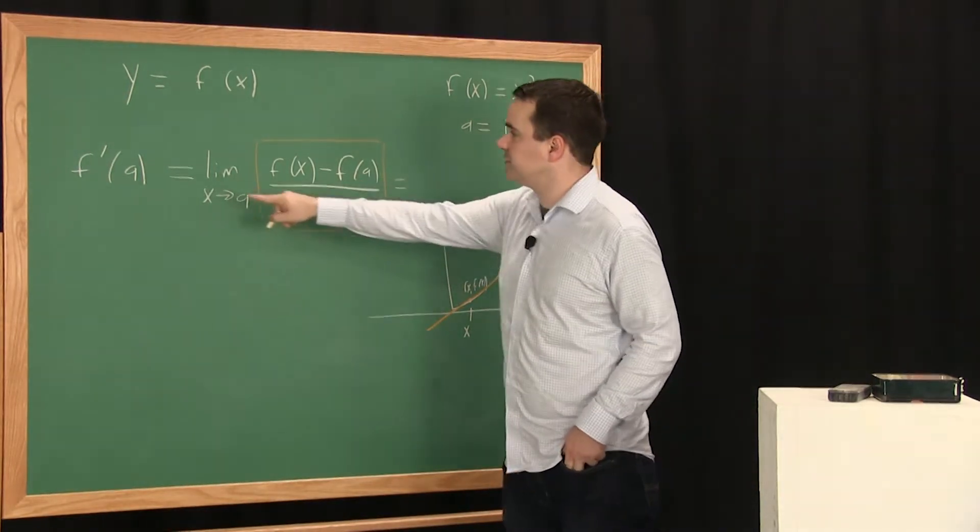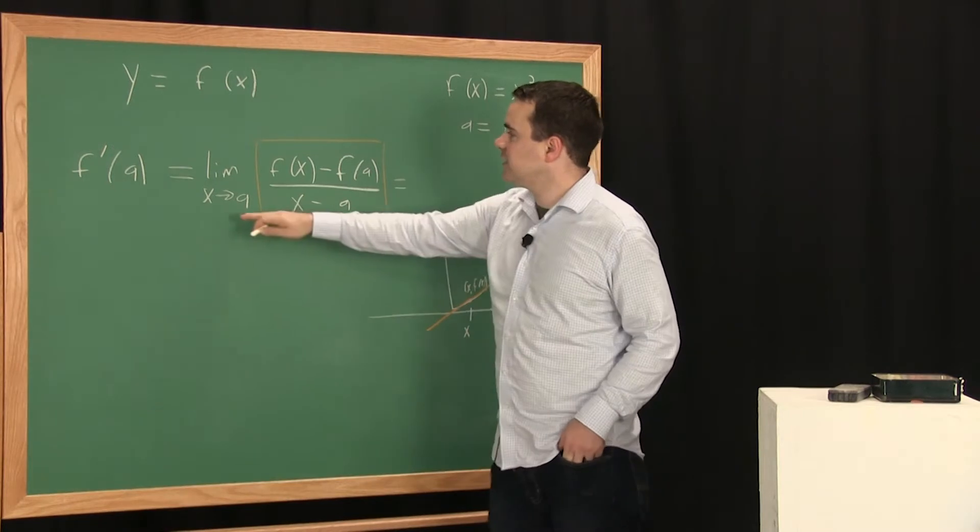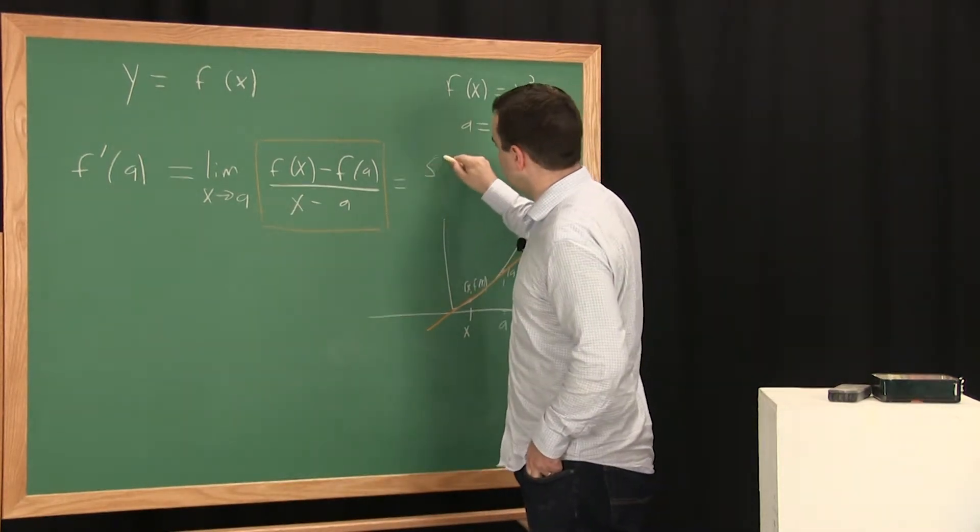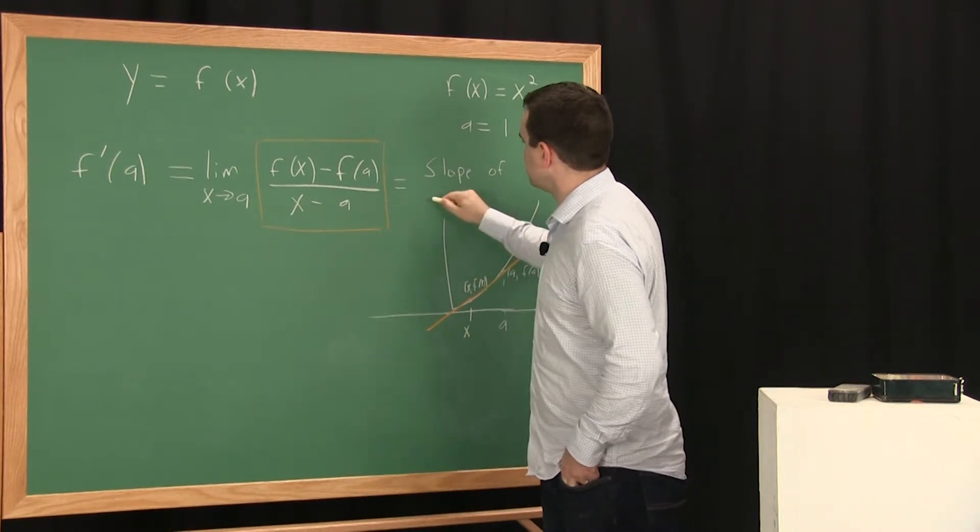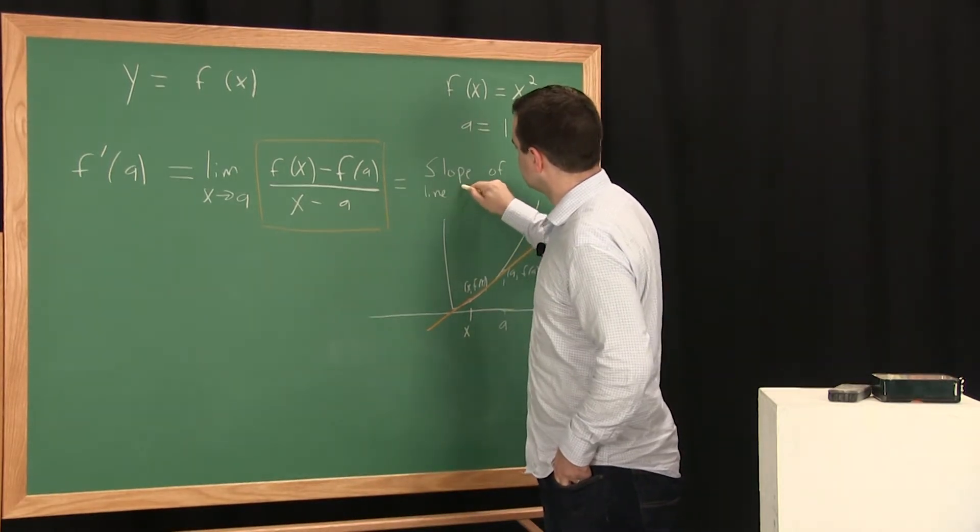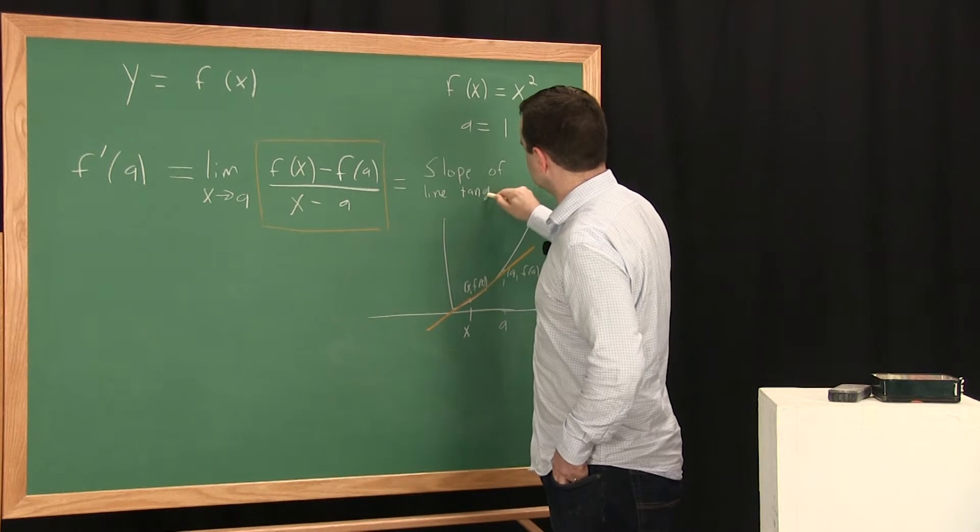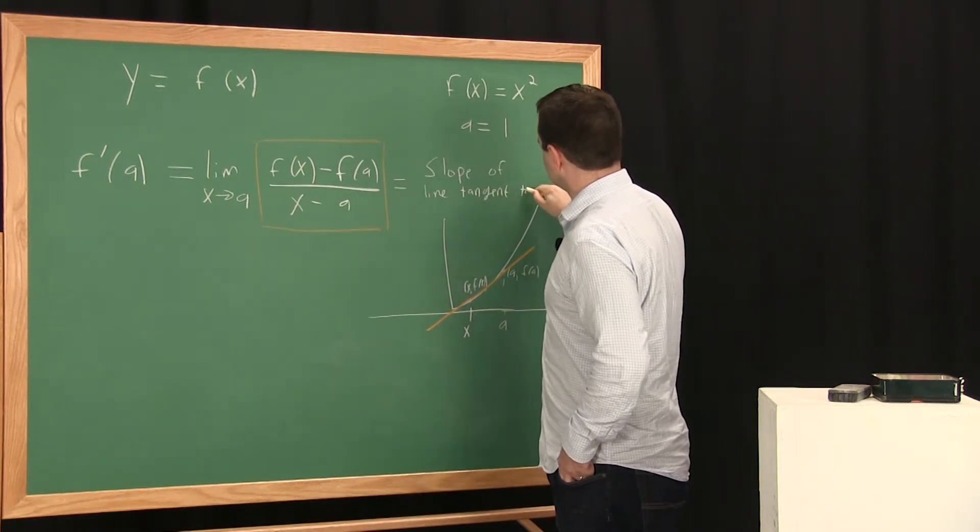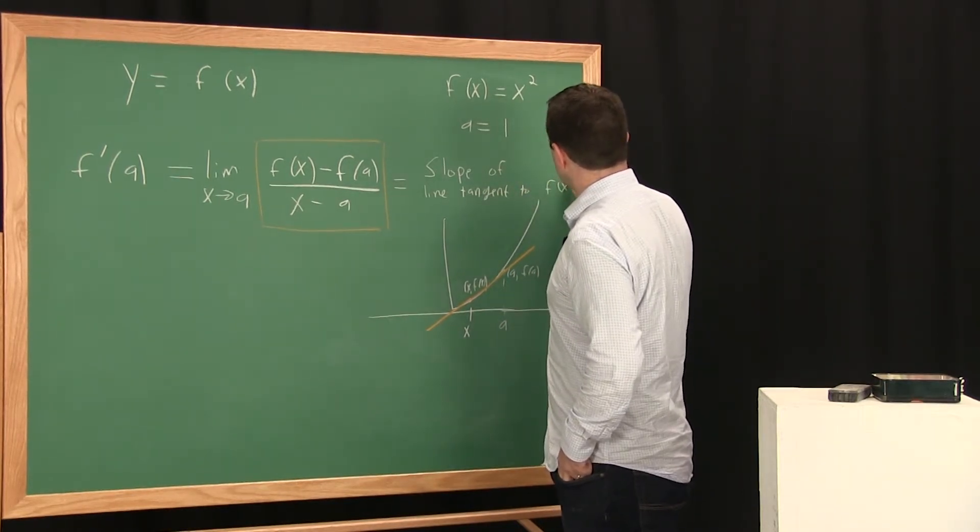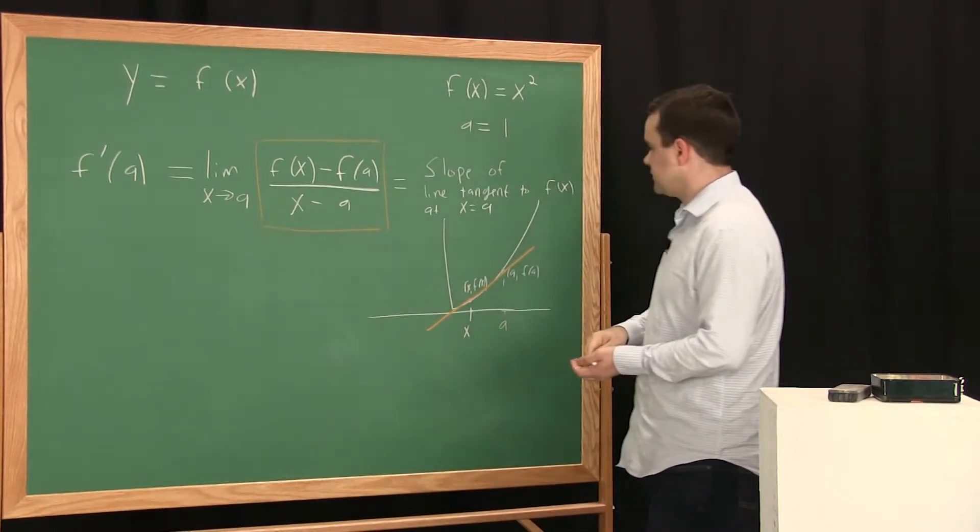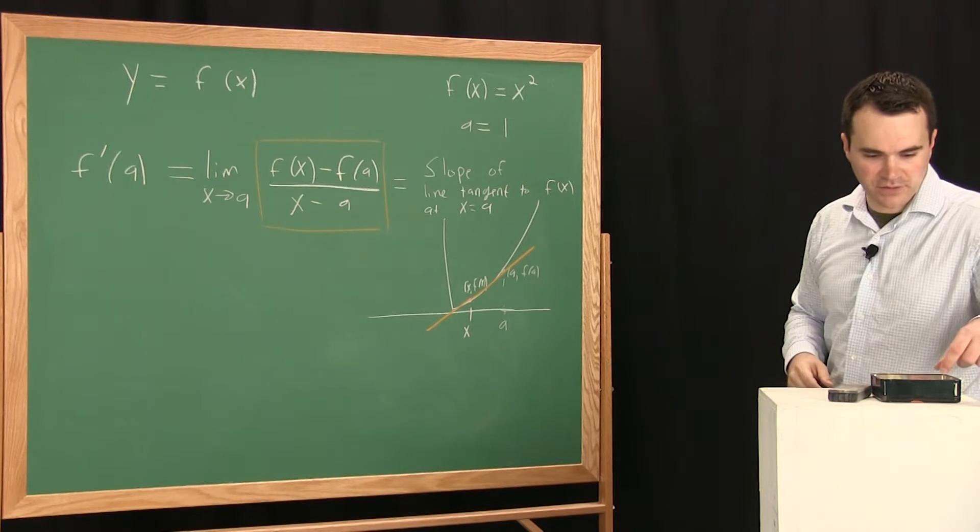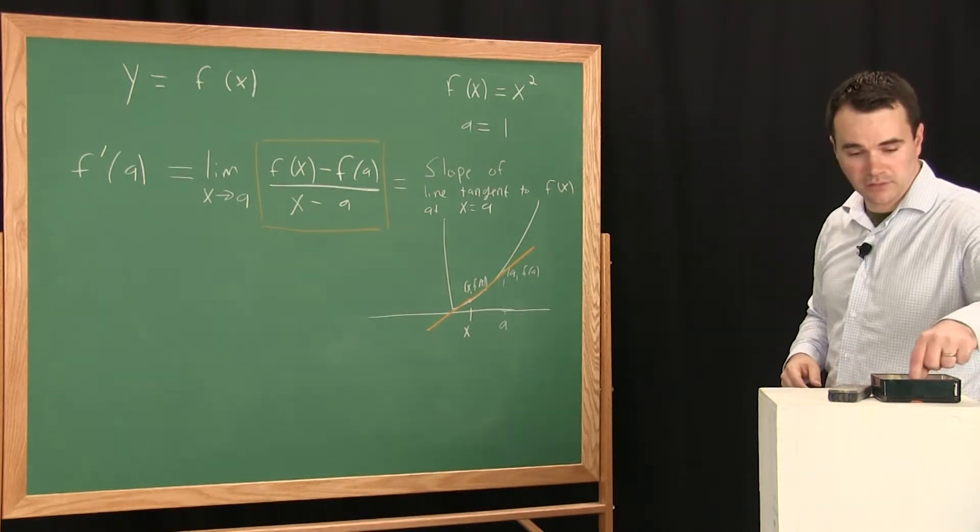So this is the definition of the derivative. It's this limit, it's defined to be the slope of the line tangent to f of x at the point x equals a. And I'll try to draw that for you in another color, let's use yellow.